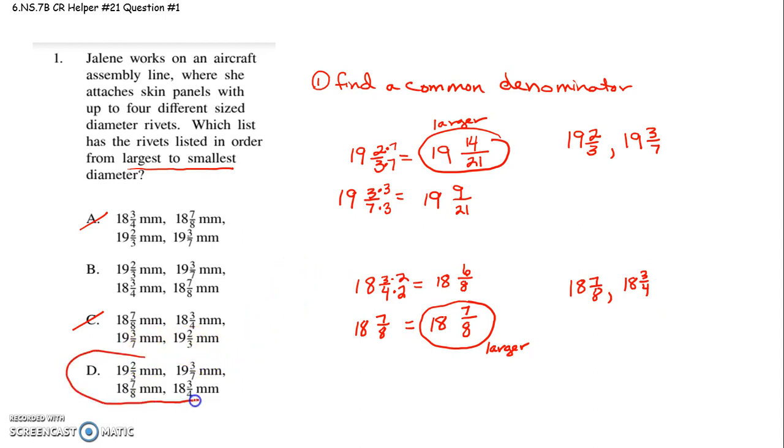So it's letter D going largest to smallest. 19 and two-thirds is bigger than 19 and three-sevenths. 18 and seven-eighths is bigger than 18 and three-fourths. I hope that helps. Make sure you find a common denominator.